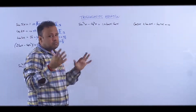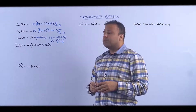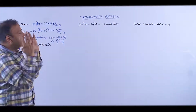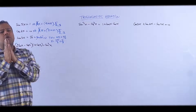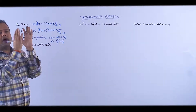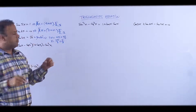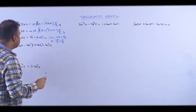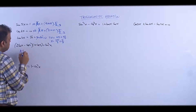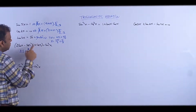Yeh seedha straightforward question nahi hai. We are going to simplify, because ultimately every equation will reduce to sin θ = sin α, cos θ = cos α, or tan θ = tan α. Multiplying, we get 2sin(x) + 2sin(x)cos(x).